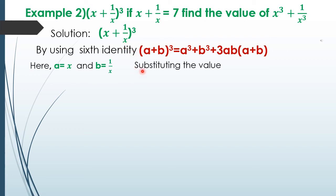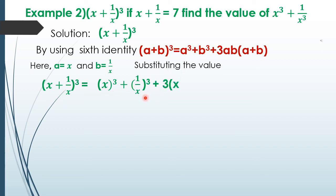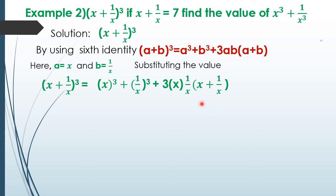Substituting: (x + 1/x)³ = x³ + 1/x³ + 3 × x × 1/x × (x + 1/x). Since x × 1/x = 1, this simplifies to x³ + 1/x³ + 3(x + 1/x).